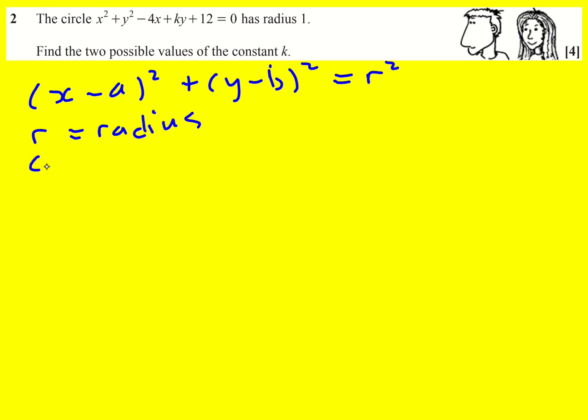R is the radius and the center is (a,b). Sorry, I've not written any C. Center AB. So essentially we need to write this equation here in this form and then we'll be able to read off what r is in terms of k and hence figure it out. So that's going to mean we need to complete the square.